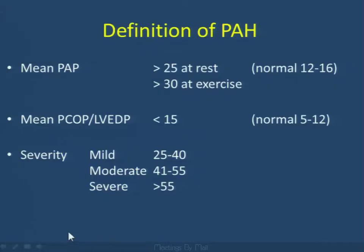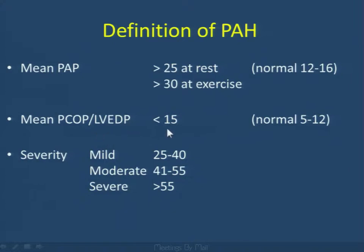What is the definition of pulmonary arterial hypertension? This is obviously diagnosed clinically, often at cardiac cath. Pulmonary arterial hypertension is defined as a mean PA pressure at rest greater than 25 mmHg — normal range 12 to 16, and 30 at exercise — without any mean LVEDP elevation (normal 5 to 12), which helps us diagnose these pre-capillary patients.